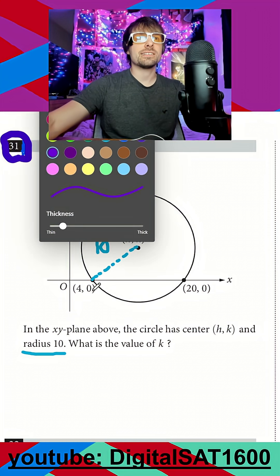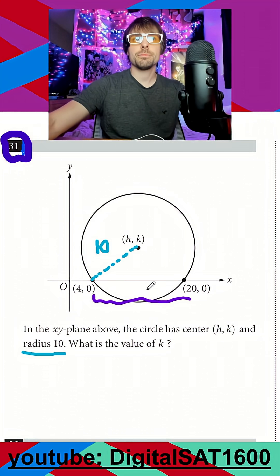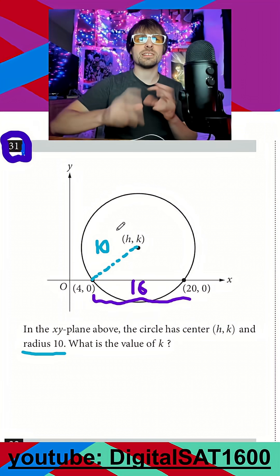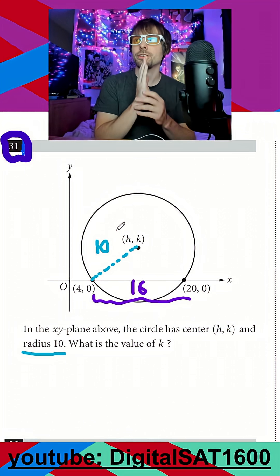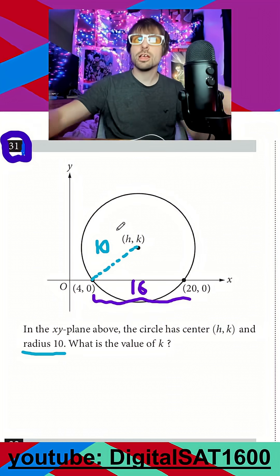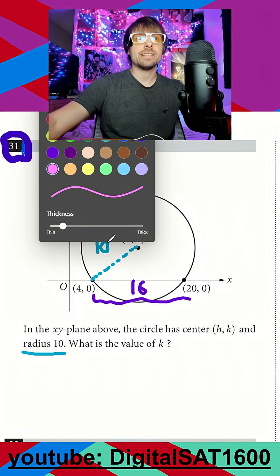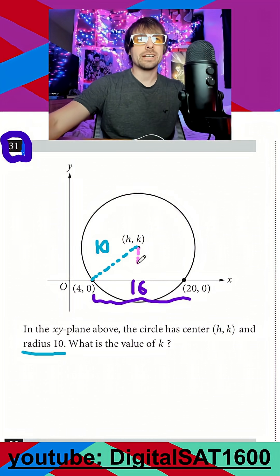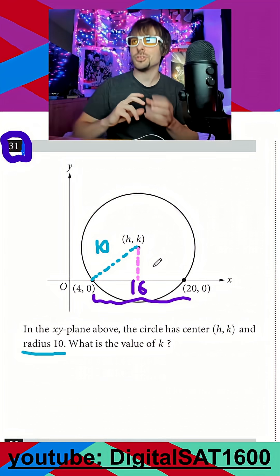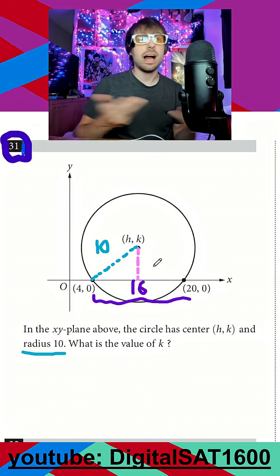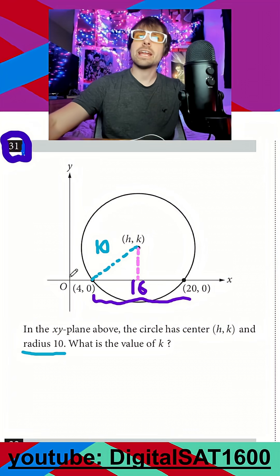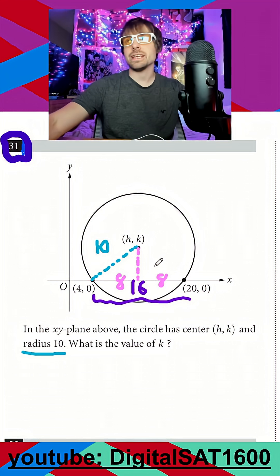We also have this x distance here from 4 to 20, so the total distance between my endpoints is 16. My h value here is the center of my circle, and it's the center of these two endpoints. I could draw a line down the middle — this is kind of like drawing an altitude, which is another thing we have to do in a lot of geometry triangle problems. I just formed my right triangle, and this base is going to be 8 because it splits in half — 8 to the left and 8 to the right.